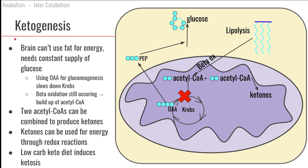As mentioned previously when talking about gluconeogenesis, the brain can't use fat for energy, so the brain needs a constant supply of glucose. However, if we are constantly relying on making glucose by taking oxaloacetate, turning it into pyruvate and doing glycolysis backwards, we're going to run out of oxaloacetate in the Krebs cycle.